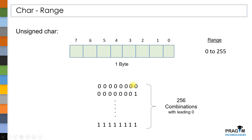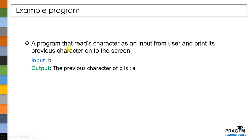Now let's write an example program that reads a character as input from the user and prints its previous character onto the screen. For example, if I give input character as 'b', then the output should be the previous character of 'b', which is 'a'.